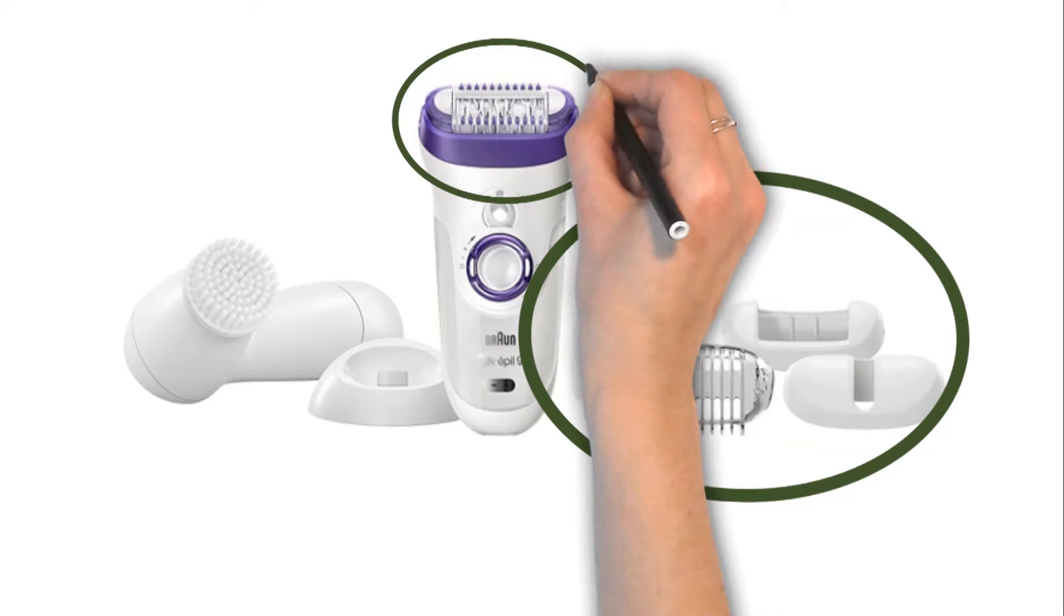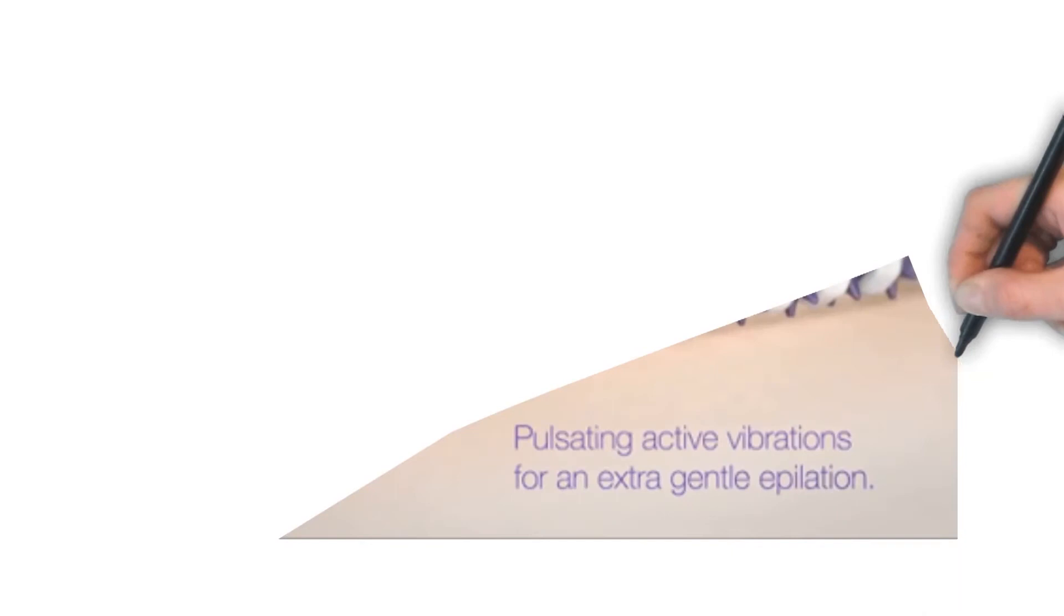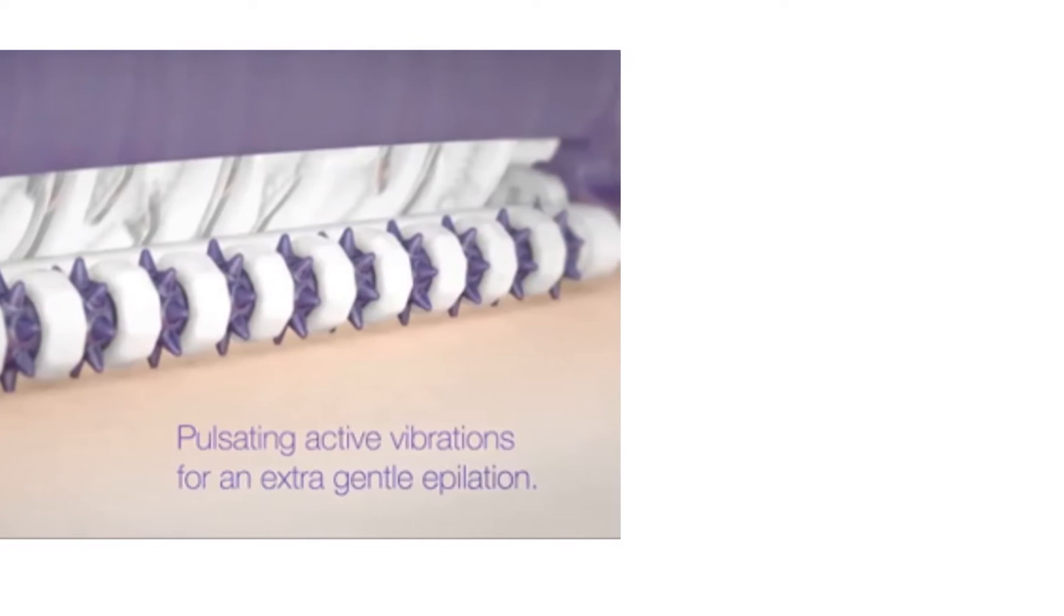A shaver head and a trimmer cap are included to transform your epilator into a full-fledged electric shaver when needed. Pulsating active vibrations provide extra gentle sensation. Regular use makes epilation virtually painless. The pivoting head smoothly adapts to body contours for superior comfort and efficiency.